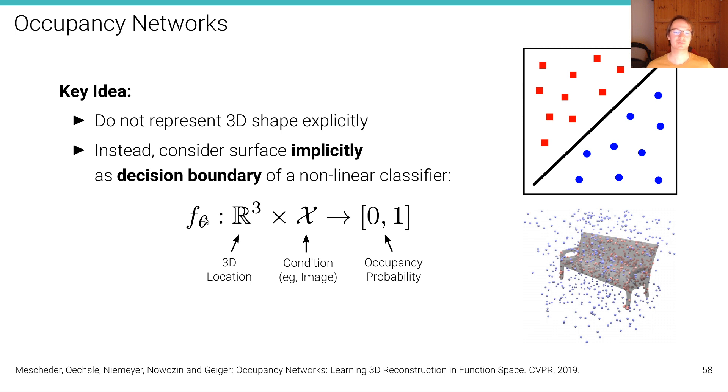So this is a function with parameters theta. It's a neural network that takes as input a 3D location and some condition—an image that we want to reconstruct the 3D shape for—and outputs an occupancy probability such that if we take the decision boundary 0.5, here shown in gray, we can separate with this bench shape in this case the red points inside that bench from the blue points outside.